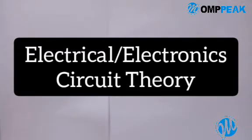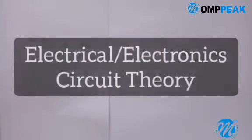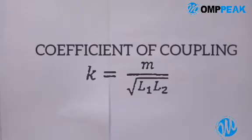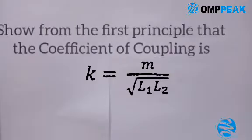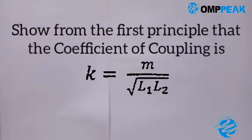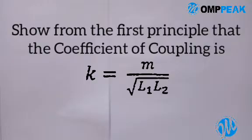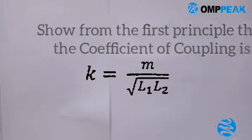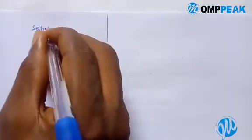Hi, what's up. In this video we're going to prove the coefficient of coupling. There is one question that says show from the first principle that the coefficient of coupling is k equal to M over root L1 L2. So what I'm going to do now is start from the solution.